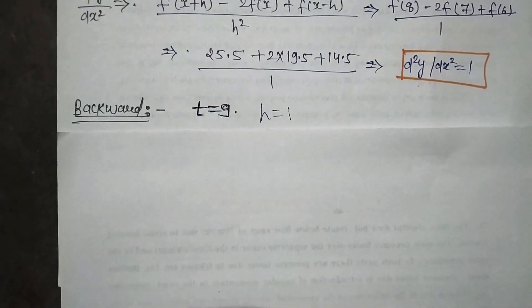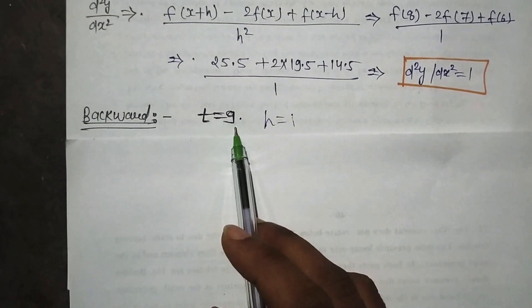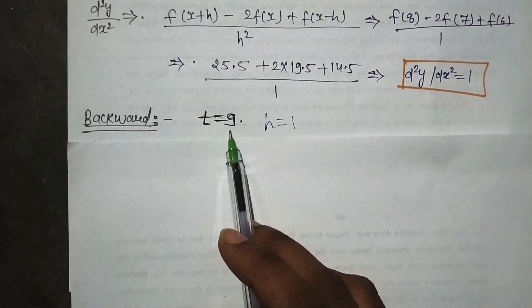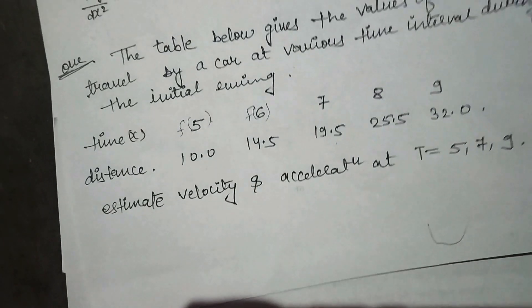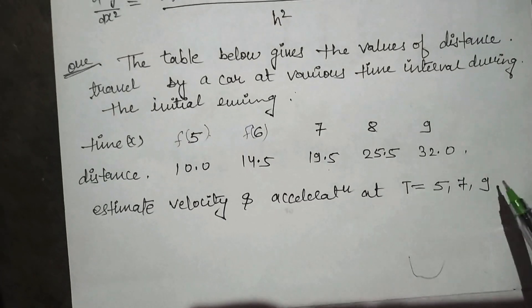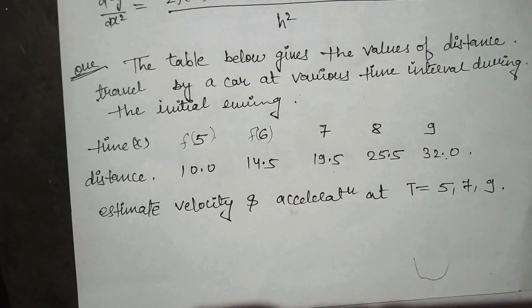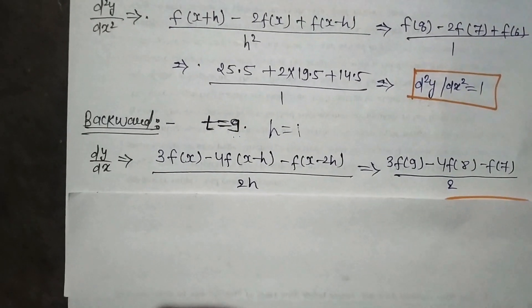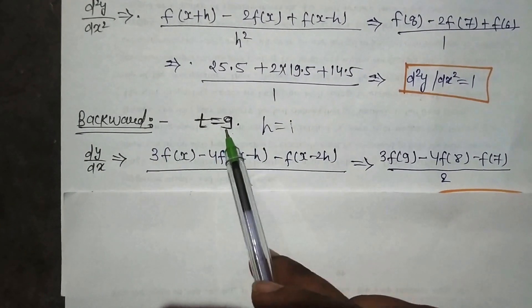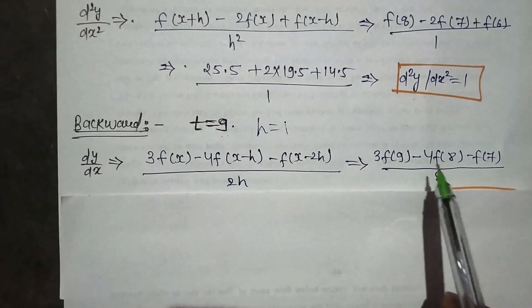Let's move to the backward. In your question it is given last value 9, and 9 is at the end. That's why in this backward formula will apply. This is 9 and 9 is at last. So we will apply backward. Again this is the formula. We have put in place of x 9, in place of h 1, and solve it out.